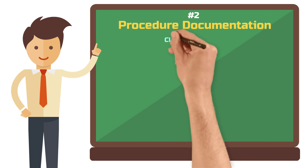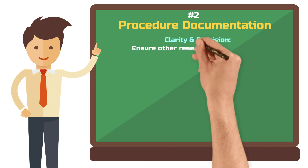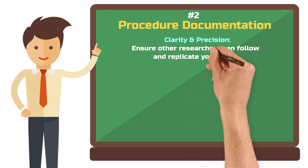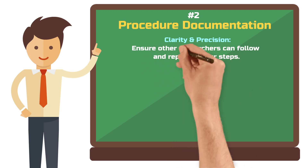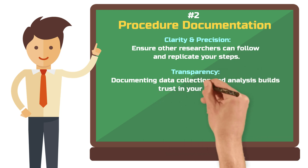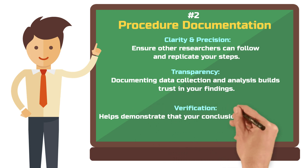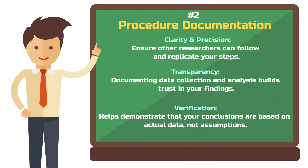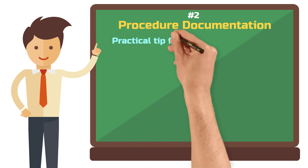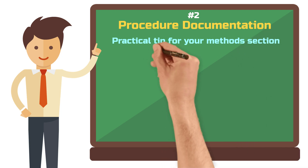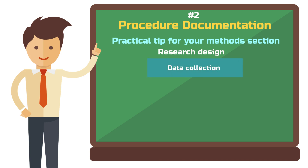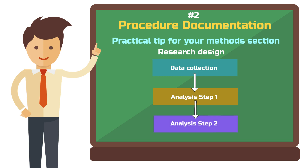Your procedural documentation should be clear and precise so that other researchers can follow the steps and verify the results if needed. By carefully documenting your procedures of data collection and analysis, you ensure transparency and make it easier to communicate that your findings actually come from the data you collected. To implement this, I recommend presenting your overall research design as an illustration showing all the steps — data collection, analysis step one, analysis step two, and so on — and including this figure in your research design section.